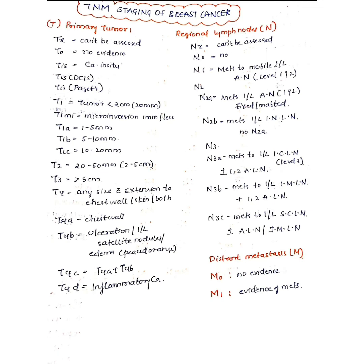In N3, level 3 lymph nodes are involved. N3a has metastasis to the ipsilateral infraclavicular (level 3) lymph nodes, which may or may not include level 1 and level 2 axillary nodes. N3b has metastasis to both the ipsilateral axillary group (level 1 and 2) and the ipsilateral internal mammary group. N3c has metastasis to the ipsilateral supraclavicular lymph nodes, with or without axillary or internal mammary involvement.